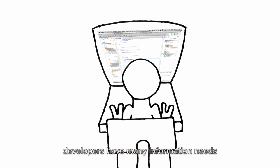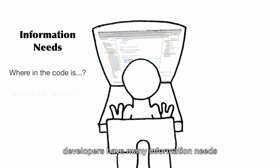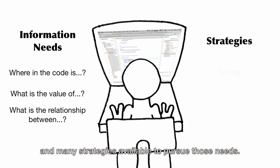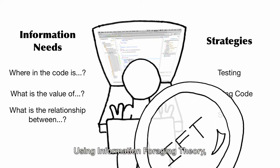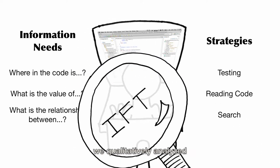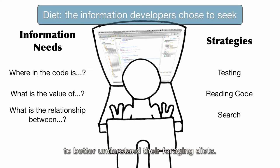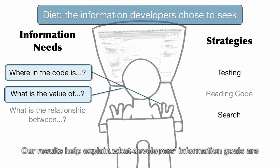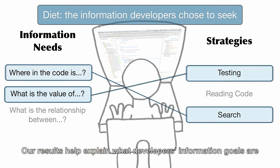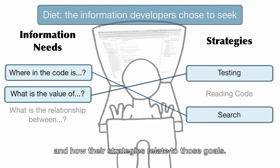When debugging a program, developers have many information needs and many strategies available to pursue those needs. Using information foraging theory, we qualitatively analyzed what information professional developers chose to seek while debugging to better understand their foraging diets. Our results help explain what developers' information goals are and how their strategies relate to those goals.